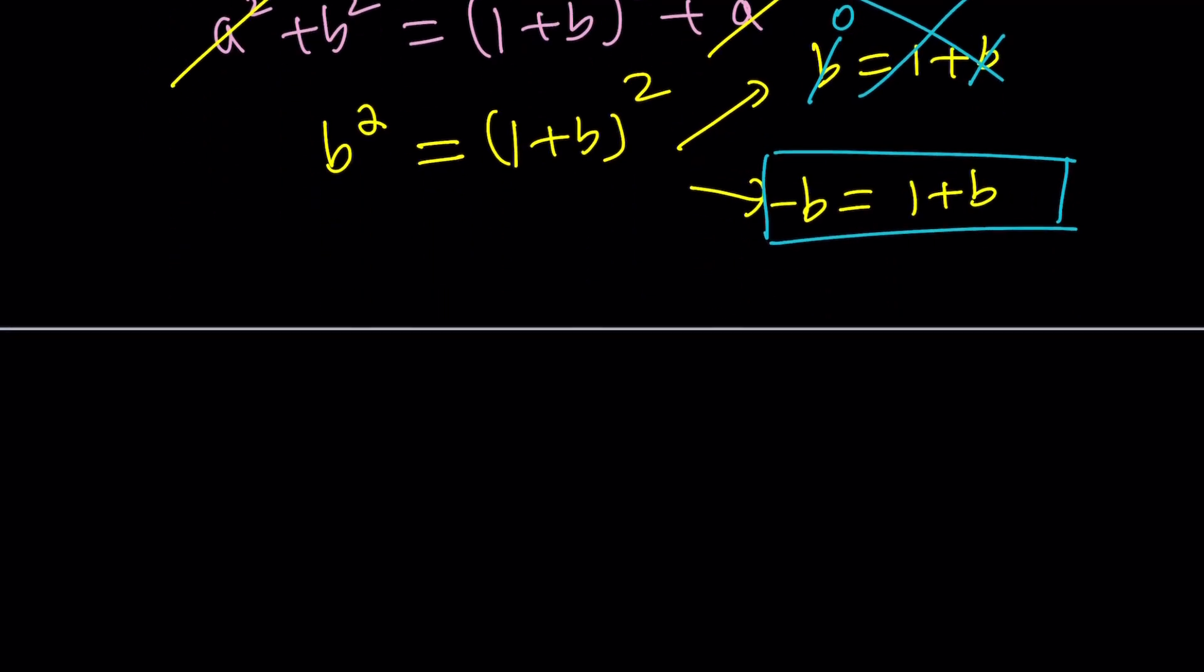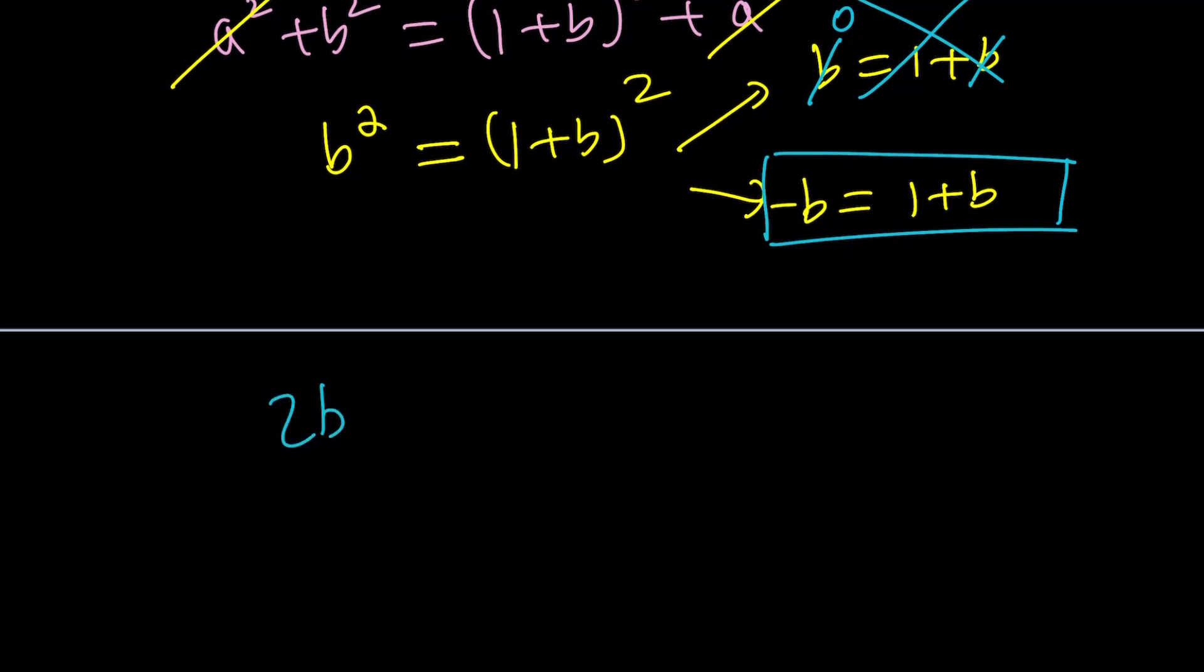And that means 2B, or not 2B pops up again. We get B equals negative 1 half. Awesome.